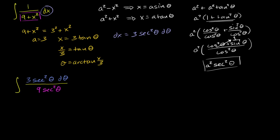Lucky for us, we have the secant squareds canceling out, you have 3 over 9. This whole thing can be rewritten as 1 third, that's just the 3 over 9, times the indefinite integral of just d theta.